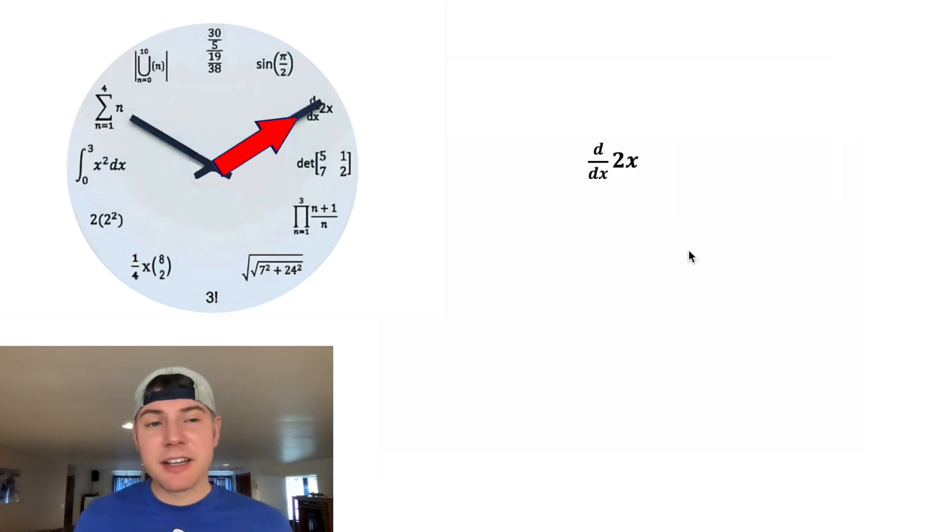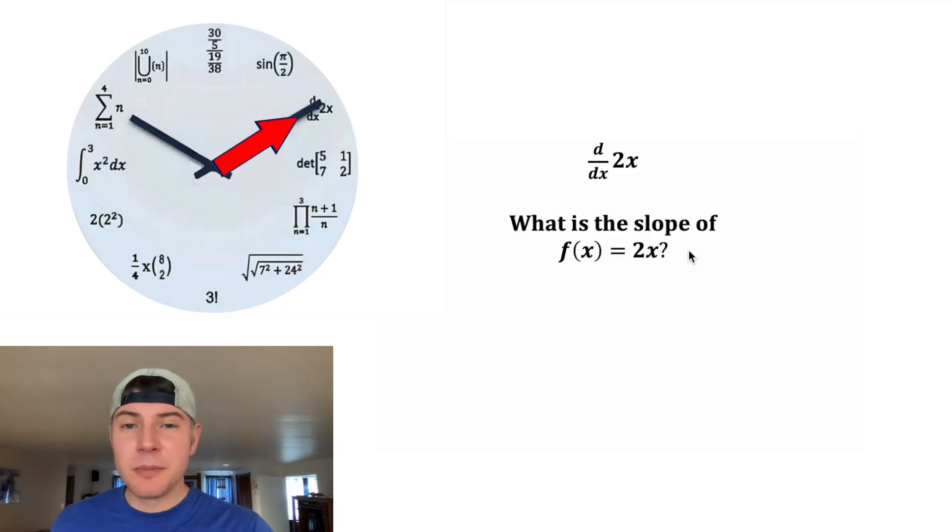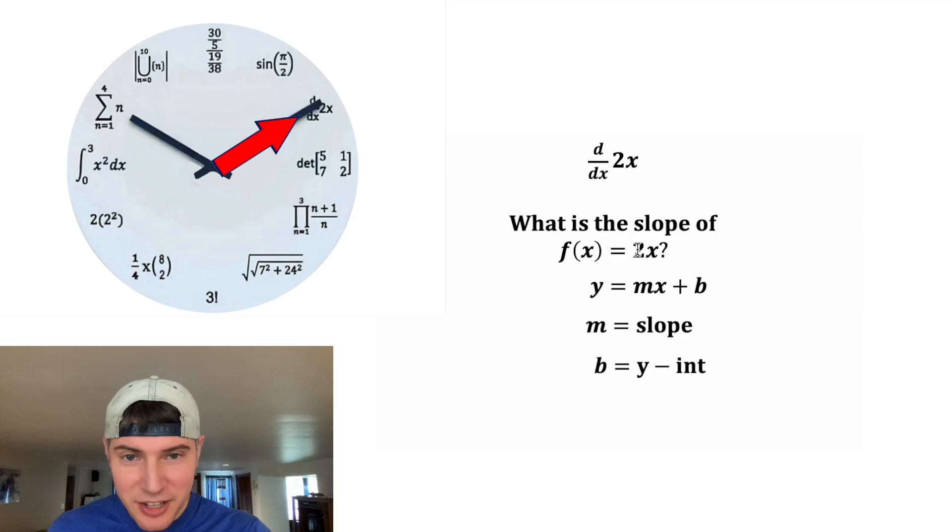So next we have d/dx of 2x. Ultimately, this means what is the slope of f(x) = 2x? 2x is linear, so we can use y = mx + b, where m is the slope and b is the y-intercept. But we can see here that the 2x is the same thing as mx. So in other words, m is equal to 2. That means the slope of 2x is equal to 2, and that's why this is at the two o'clock hour.